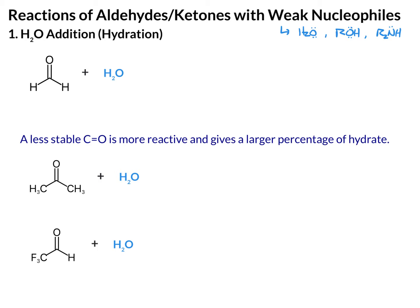We're going to start by looking at the addition of water to aldehydes and ketones. This first compound is an aldehyde with two hydrogens — this is known as formaldehyde.